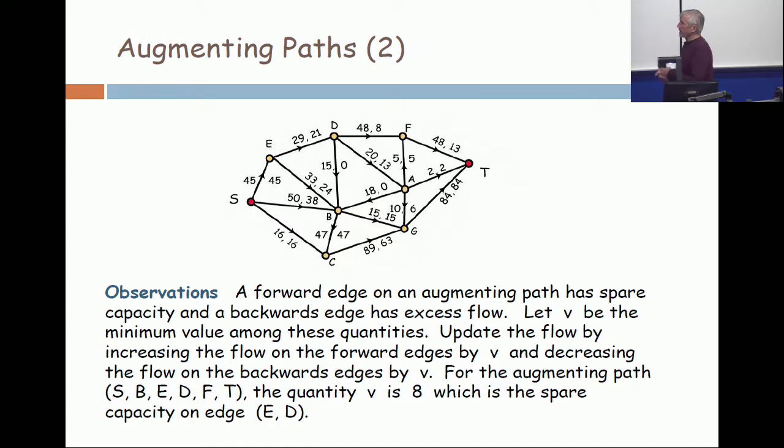We look at that path again. When you go from S to B, the spare capacity is 12. When you go backwards from B to E, the excess flow is 24. When you go forward from E to D, the spare capacity is 8. From D to F, the spare capacity is 40. From F to T, the spare capacity is 35. Which is the most restrictive of all of those? It's the 8 on the edge from E to D. So the value V in this instance is 8. Along that path, on all the forward edges, you increase the flow by 8. On the backwards edges, you decrease the flow by 8. And the conservation laws are satisfied while driving up the value of the entire flow by 8.